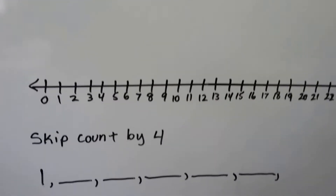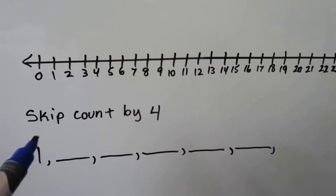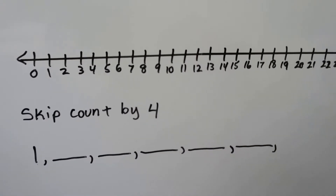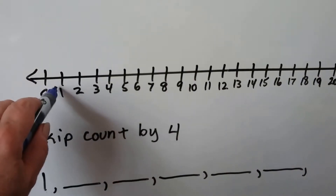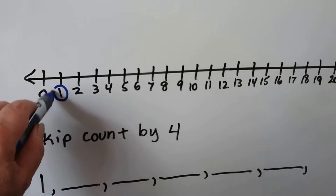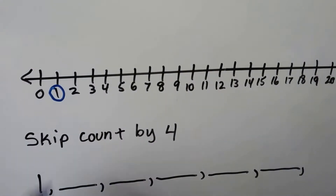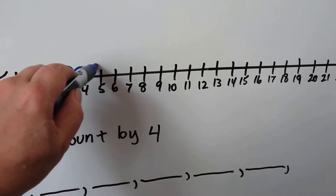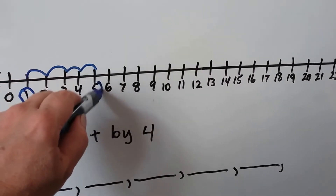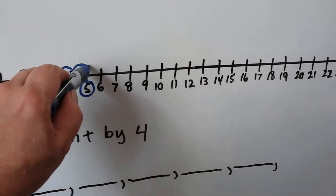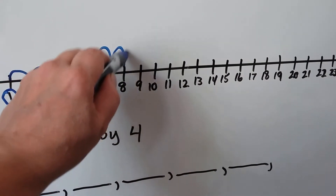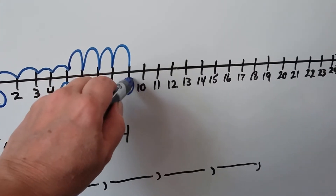Let's try this one. I'm going to skip count by four, but we're going to start with a one instead of a four. So we're starting with the one and we're going to skip count by four. One, two, three, four — so we have a five. Then one, two, three, four — we have a nine.